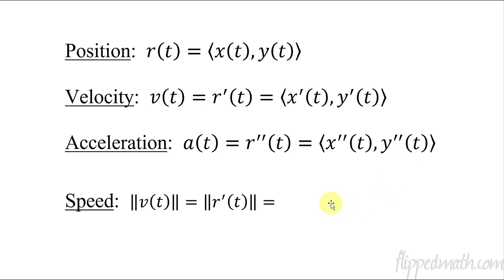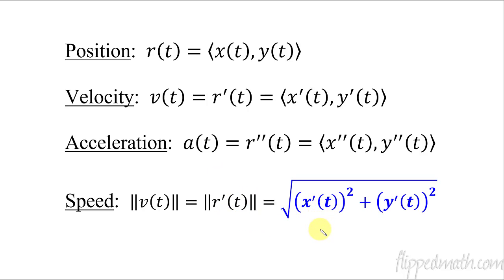Now when you get speed, speed is not a vector. Position, velocity, and acceleration are vectors, but speed means you're taking the magnitude of velocity — or in other words, the magnitude of the first derivative of position. You take the square root of x-prime squared plus y-prime squared. Be careful: it's x-prime and y-prime, not just x and y. Square the x component and the y component of your vector, then take the square root of the whole thing.